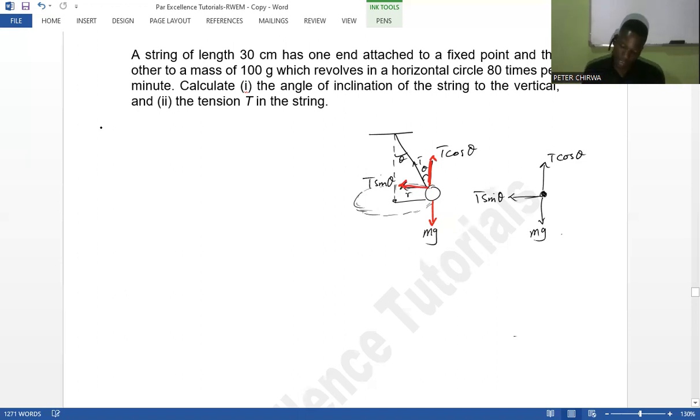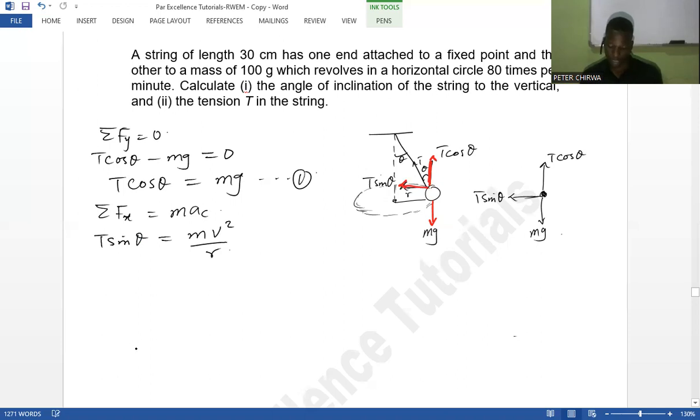We look at Newton's second law, and in the Y direction we are going to have T cos theta minus the weight being equal to zero. So we have T cos theta being equal to the weight, let that be my equation one. Also an equation in the horizontal is where this is revolving, so we have the centripetal acceleration. The force that acts as the centripetal force is T sin theta being equal to M v squared over R.